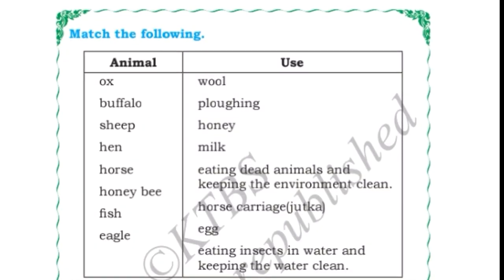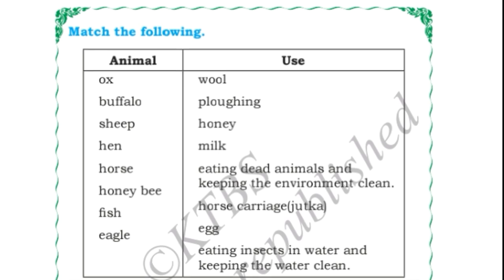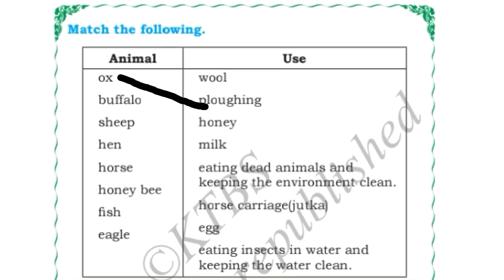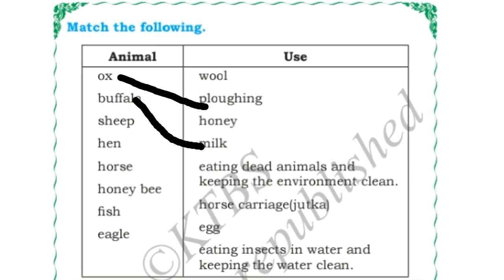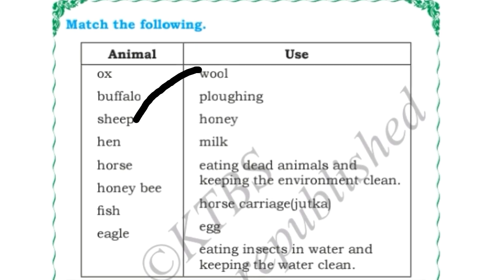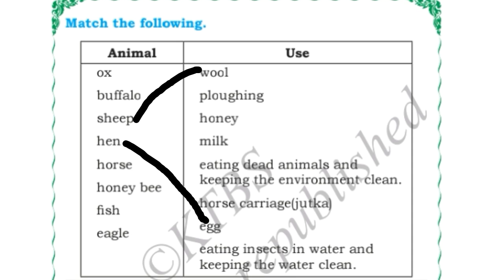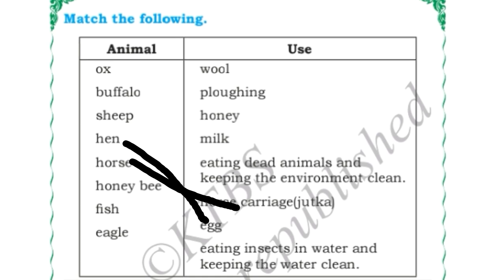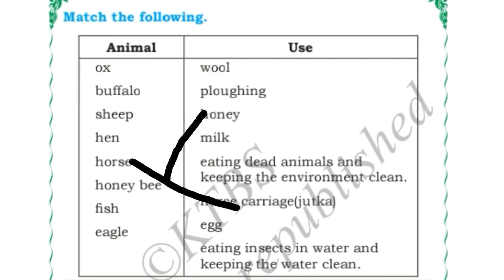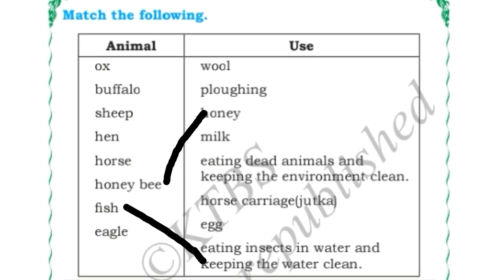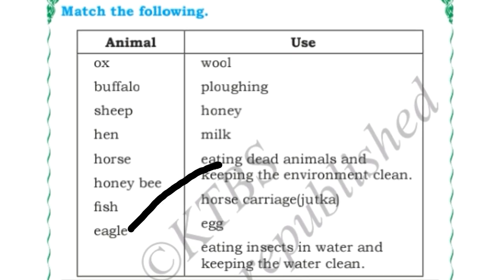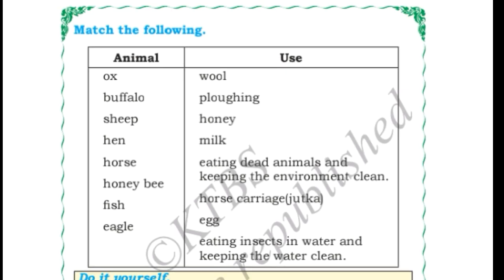Match the following animals and their uses. Ox helps in plowing. Buffalo gives us milk. Sheep gives us wool. Hen gives us egg. Horse is used for horse carriage. Fish eats insects in water and keeps the water clean. Eagle eats dead animals and keeps the environment clean.